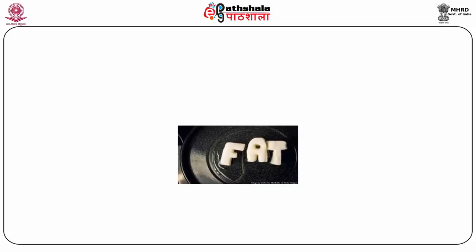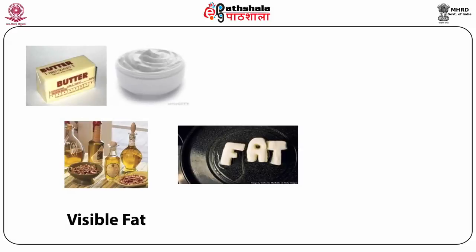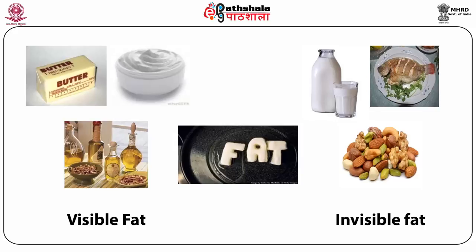On the screen you can see some pictures of visible as well as invisible fat. Butter and different types of oils are in the category of visible fat because we can see these foods as we add them in the preparation of foodstuffs. The second category is invisible fat, which includes milk, fish and certain dried nuts, because fat is inbuilt in the structural cells of these foodstuffs and we cannot see from outside that fat is present.